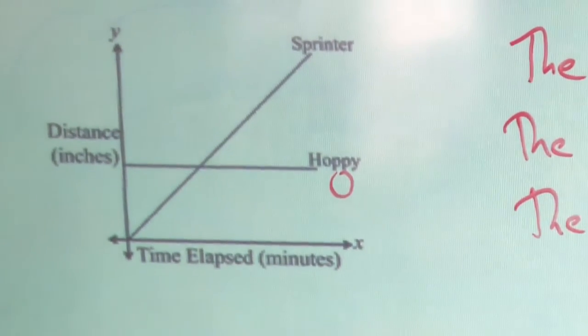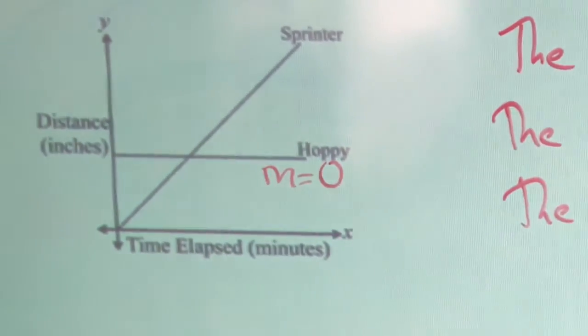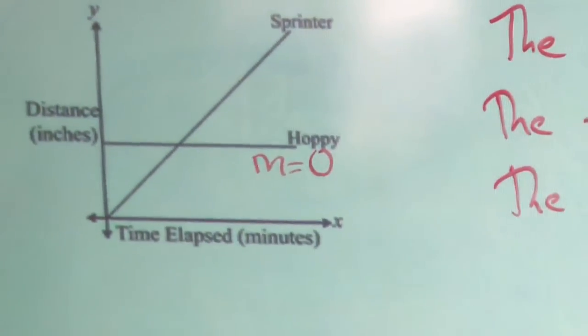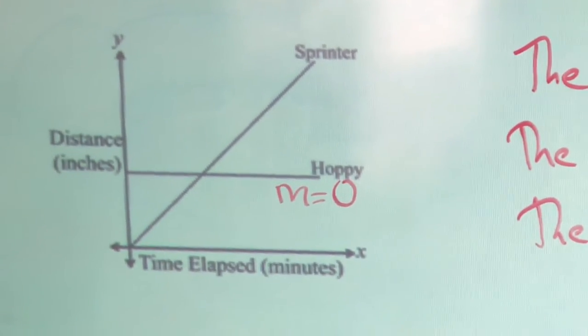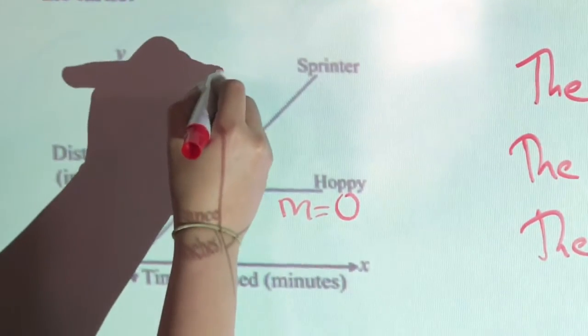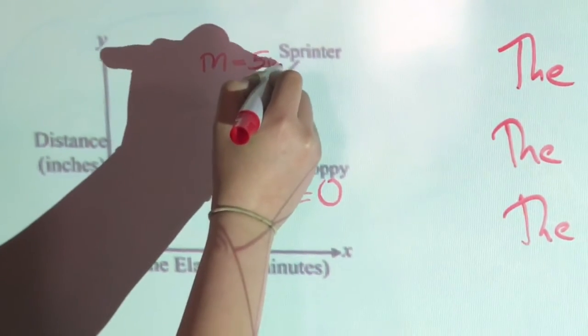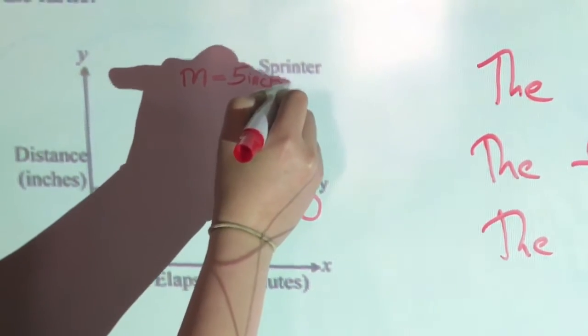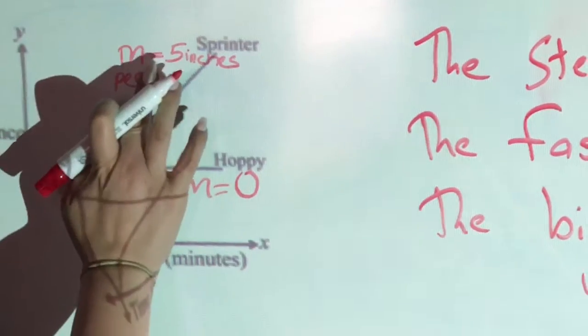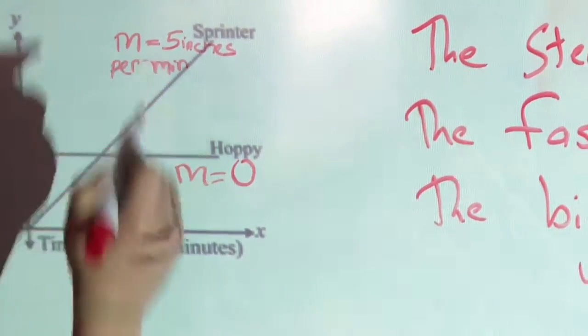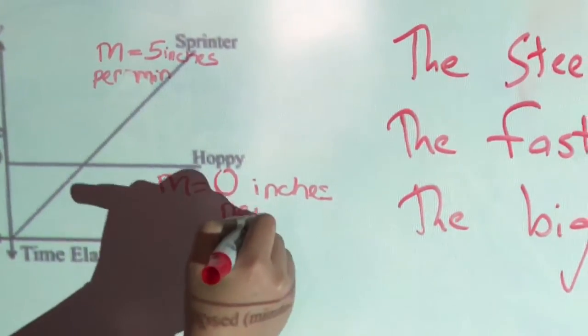And so that would be M equals zero for Hoppy. And we don't know the actual, we don't have time markings here, but we could just surmise, let's say M is for sprinter and would be, let's say it's five. What's our distance here? So five inches per minute, which is still pretty slow. Okay. That's sprinter. And then Hoppy is zero inches per minute. And that's just it. I mean, what can I say? Obviously sprinter is going to win the race.